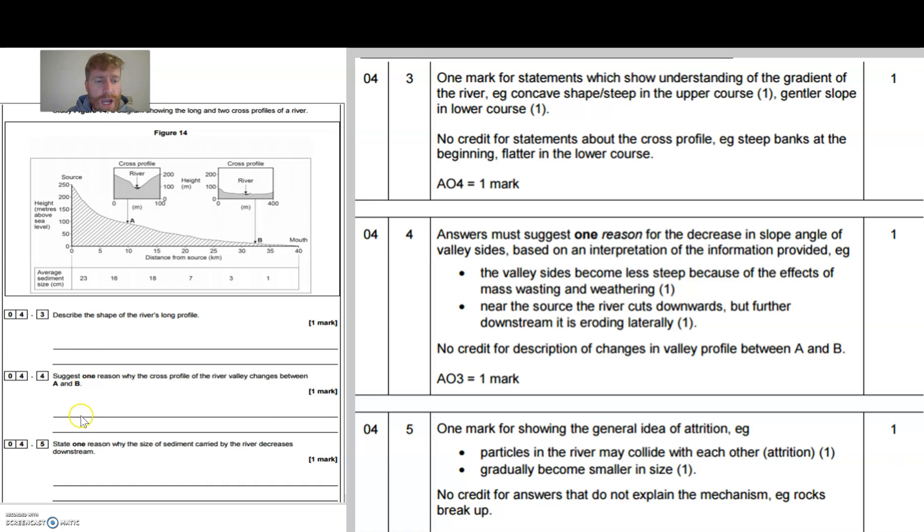There was no credit for description of the changes in the valley between A and B. Notice how it's not described the changes, it suggests one reason - it's explained. I must admit when I read that I was reading describe, but if you read that question properly it's asking you why. So why has it changed? You could have said to do with mass wasting and weathering, but what I would have said basically is that in the upper course it's vertical erosion that dominates, in the lower course it's lateral erosion that dominates. You don't have to say both, just one of those statements to get the mark.